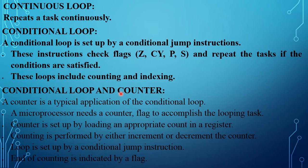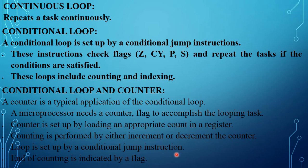A counter is a typical application of the conditional loop. A microprocessor needs a counter to accomplish the looping task. A counter is set up by loading an appropriate count in a register. Counting is performed by either incrementing or decrementing the counter. The loop is set up by a conditional jump instruction, and the end of counting is indicated by a flag.